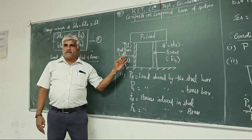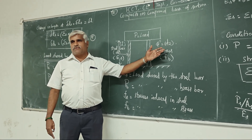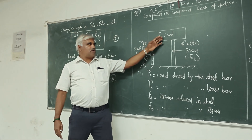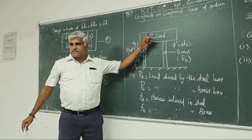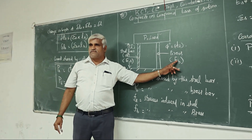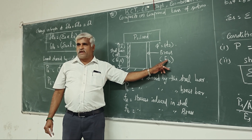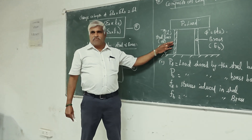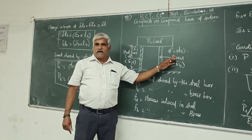For example, I have taken a steel bar and a brass bar. Similarly, you can take any other combination such as steel, brass, and aluminium. The total load on the given material is capital P. The Young's modulus of brass and steel will be known — for example, 2×10⁵ MPa or 1.75×10⁵ MPa for brass — and the diameters will also be known, such as 10 mm for steel and 15 mm for brass.